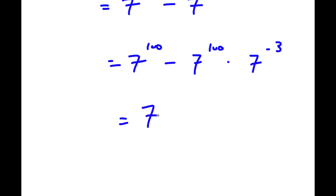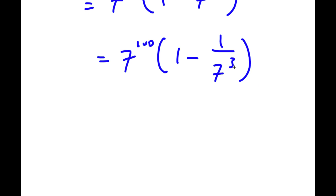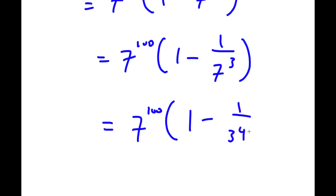This equals 7 to the power of 100 minus 7 to the power of 100 times 7 to the power of negative 3. Factoring out 7 to the power of 100, I get 7 to the power of 100 times 1 minus 7 to the power of negative 3. Now 7 to the power of negative 3 is the same as 1 over 7 to the power of 3, and 7 to the power of 3 equals 343. So I have 7 to the power of 100 times 1 minus 1 over 343.